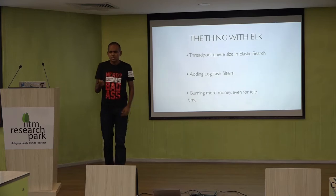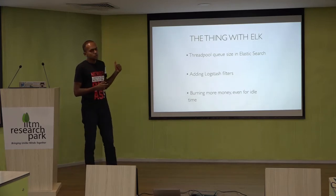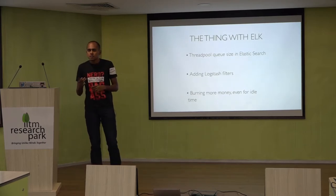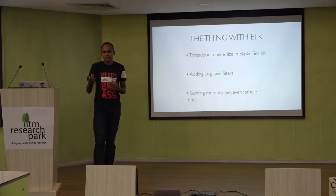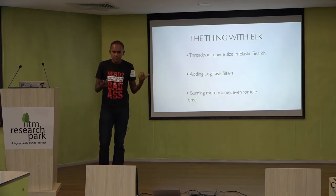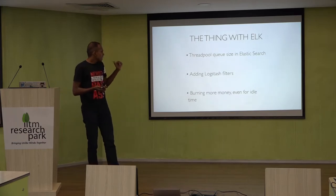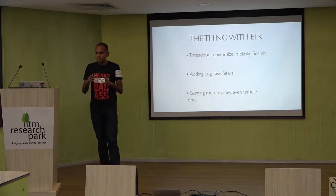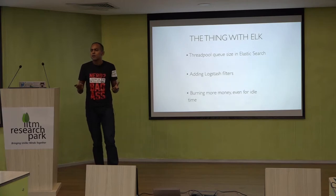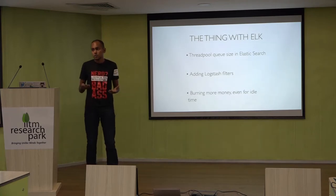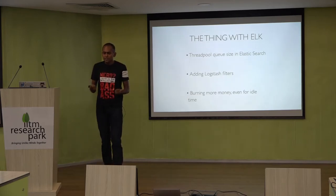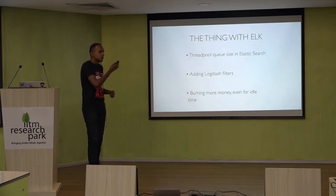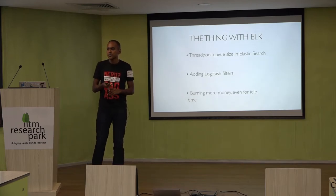We faced some problems, especially with ELK. There is something called Thread Queue Size, which defaults to 200. It's based on your machine size and causes latency. If your log throughput increases, this becomes a bottleneck. The only way to fix it is to scale up your machine, but we were burning more money and couldn't autoscale. Since it's a distributed data store, scaling up and down was not easy — it took time to redistribute data and shards across nodes. Adding Logstash filters was also a pain: people need to know Grok regex, or know Ruby and edit the Logstash code directly to add new filters.